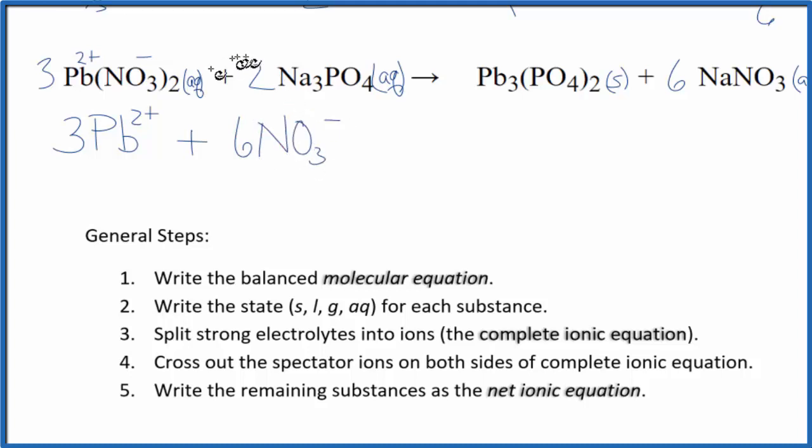Plus sodium—Group 1, so 1+—and phosphate is 3-. So I have two times three, which is six sodium ions, and then I have two times one phosphate, giving me two phosphate ions.